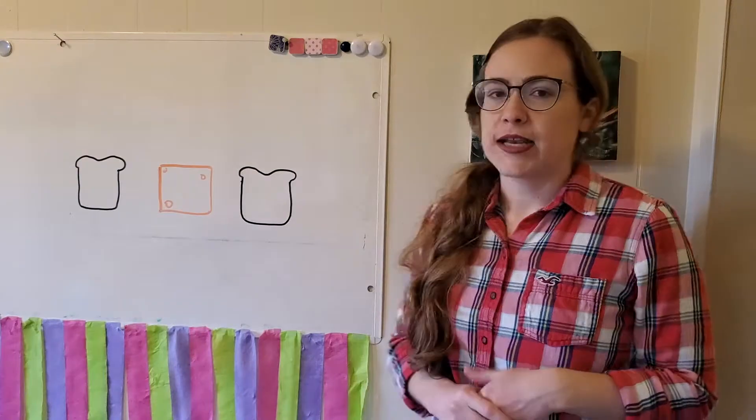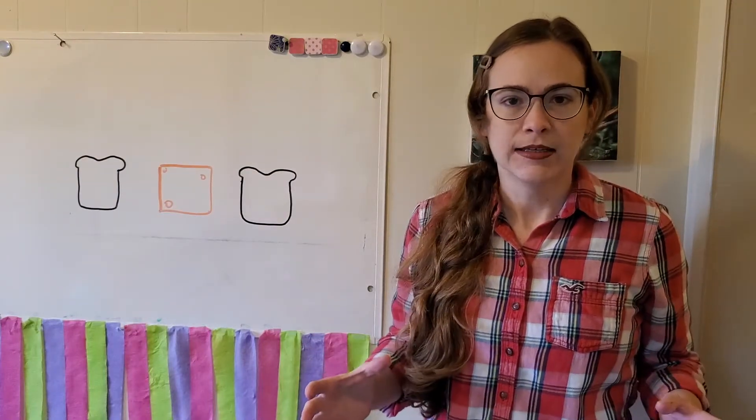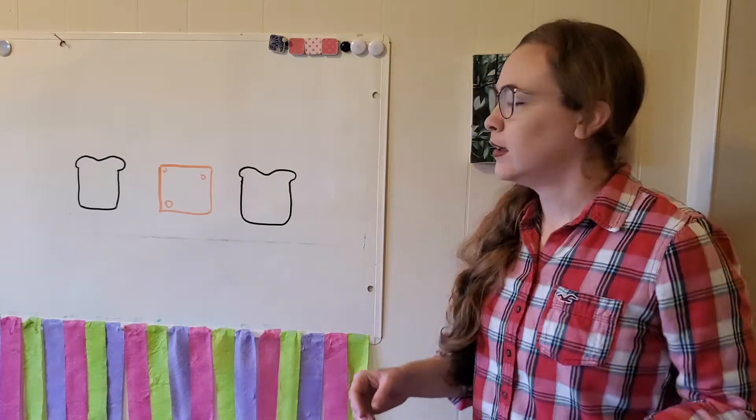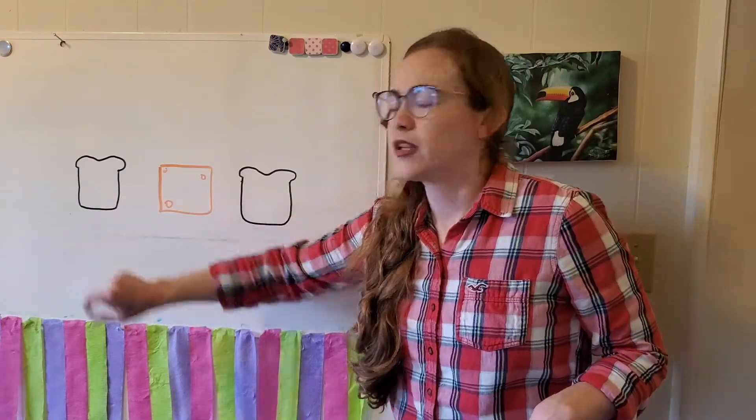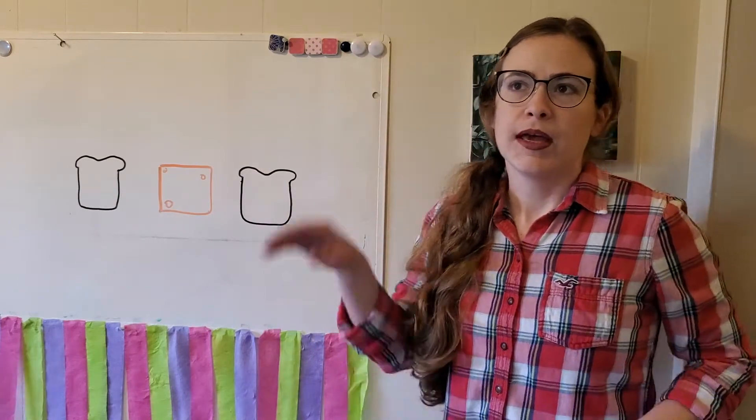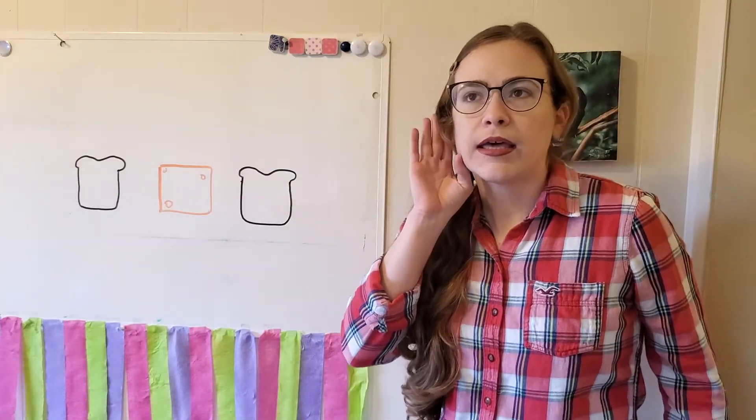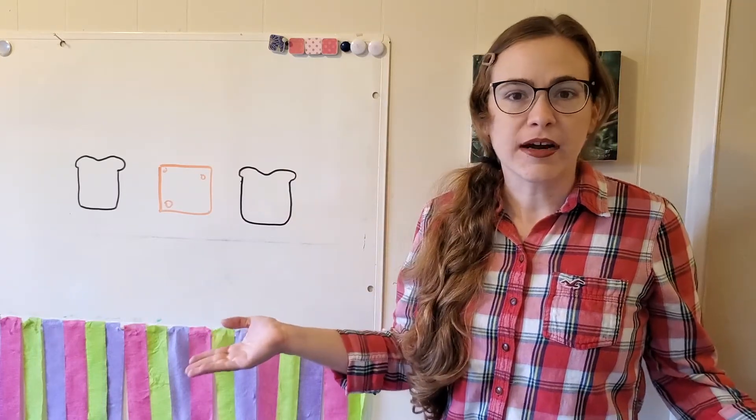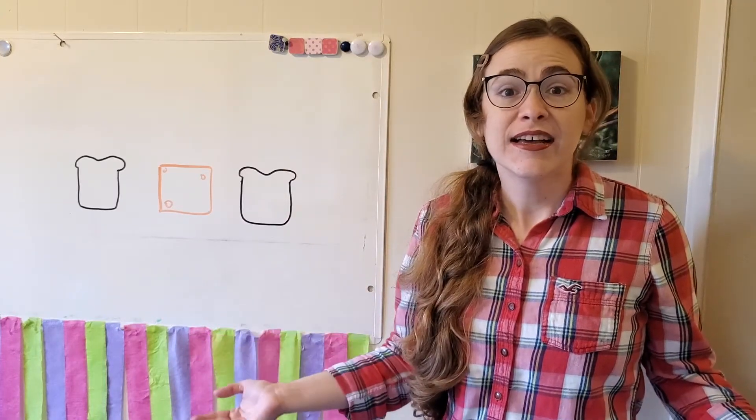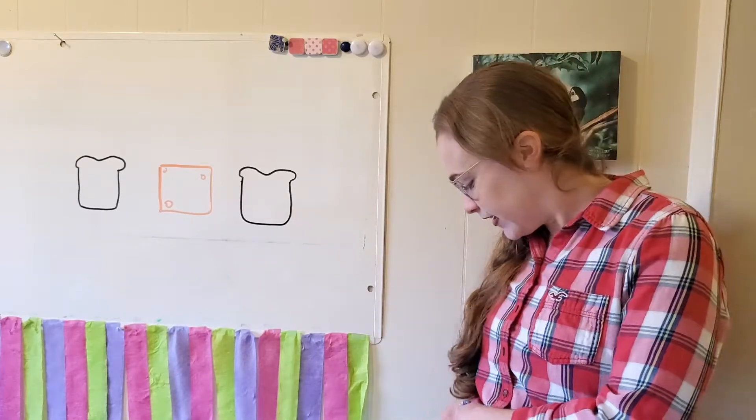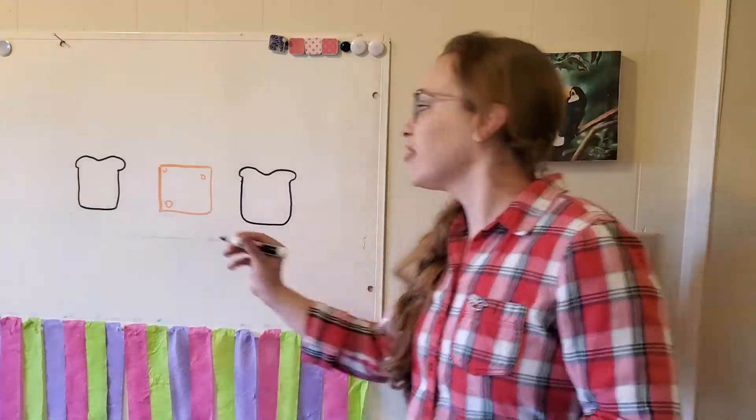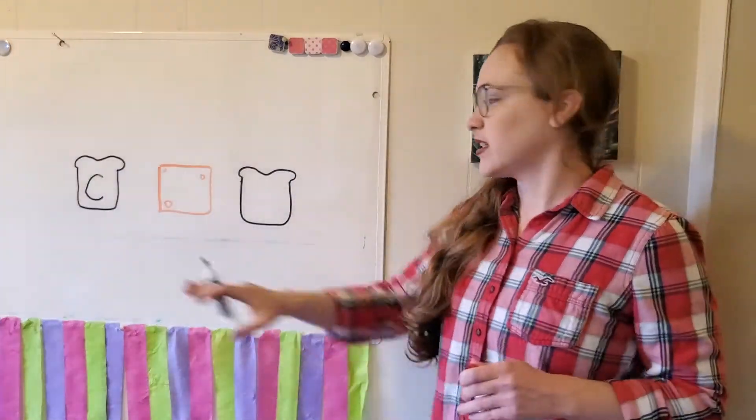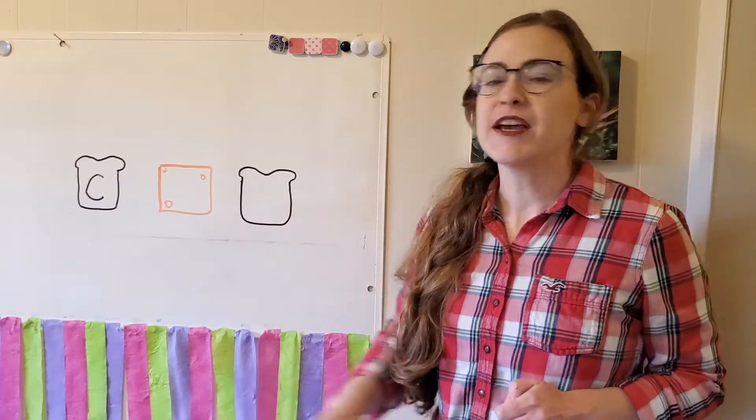So, let's say the word together. Cat. Cat. Let's listen for that first sound, the beginning sound. C. Cat. What did you hear? C. C. Right! C says C. So, I'm gonna go ahead and add that to our sandwich. The first sound in cat is C for C.